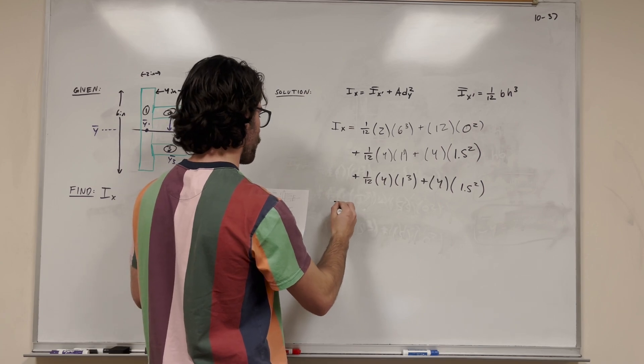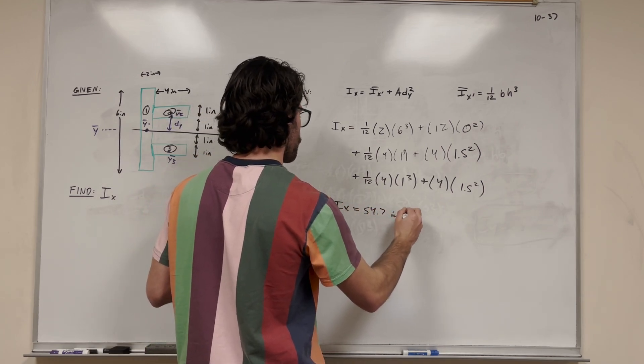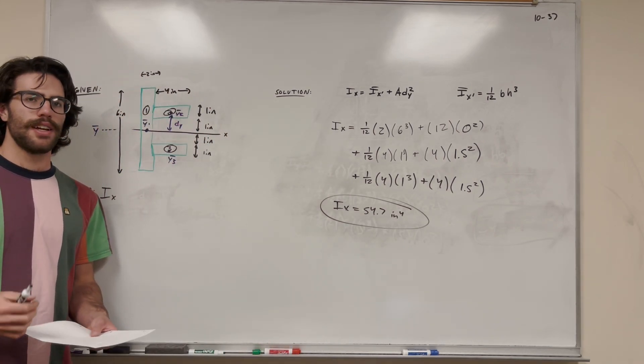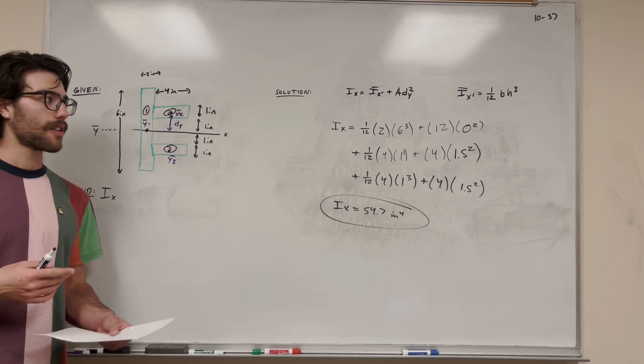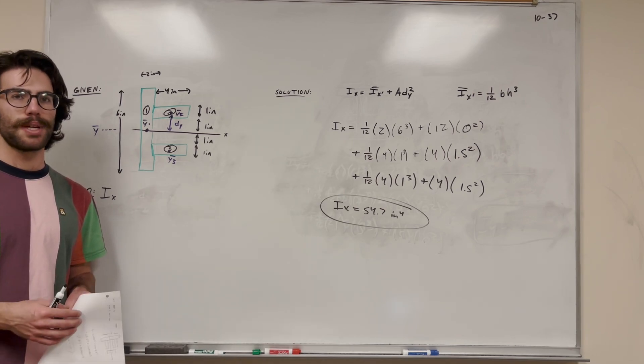So, now, we just need to do the math on this. Let's plug this into your calculator, and here we get 54.7 inches to the fourth. And there we go, we solved the problem. So, thanks for watching. If you have any questions, let me know. Check out my playlist for a bunch more problems on Moment of Inertia, so you can learn with harder samples. And I'll see you in the next video. Peace.